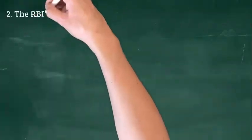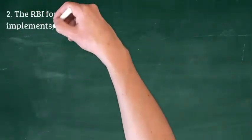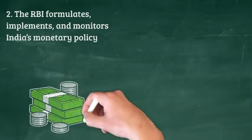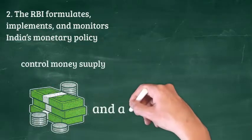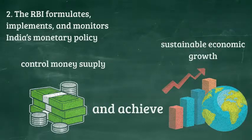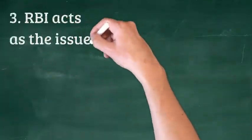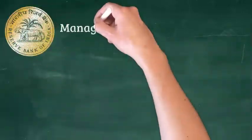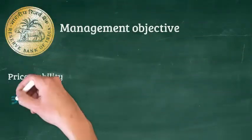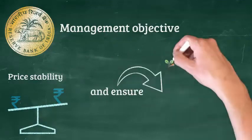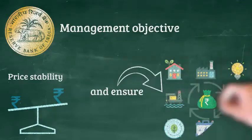The RBI formulates, implements, and monitors India's monetary policy to control money supply and achieve sustainable economic growth. RBI also acts as the issuer of national currency. The bank's management objective is to maintain price stability and ensure that credit is flowing to productive economic sectors.